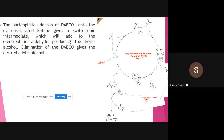This is a more precise mechanism. With this one you get a point-to-point clear idea of what is happening at each point: where the proton is shifting, where the positive charge is shifting, how DABCO is involved in the reaction, and how we can regenerate the catalyst. So the first expression is: nucleophilic addition of DABCO onto the alpha-beta unsaturated ketone gives the zwitterionic intermediate.